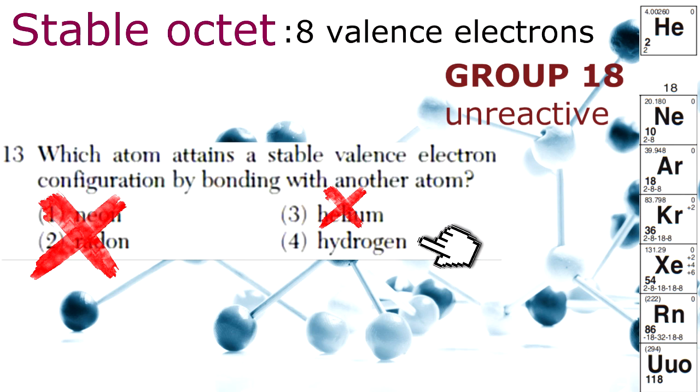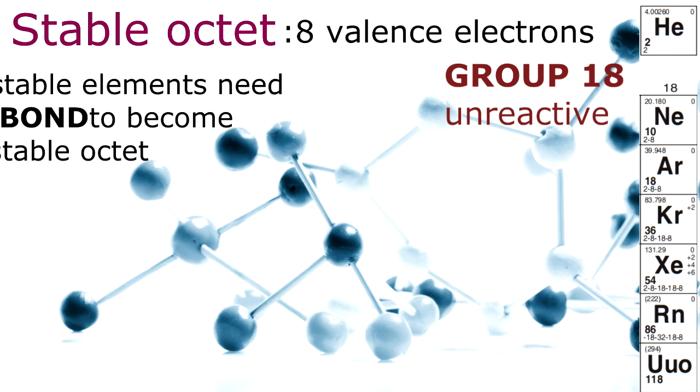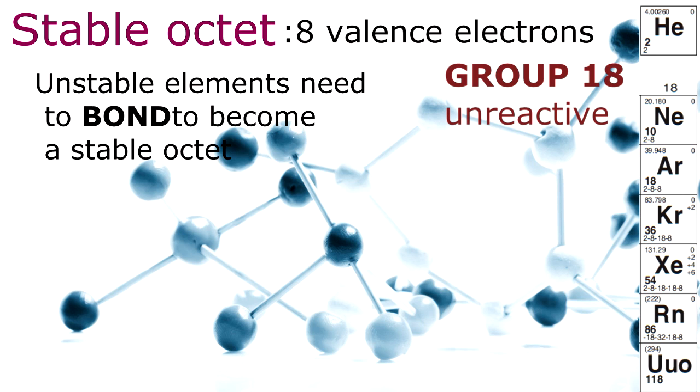Hydrogen only has one balanced electron, so it makes sense that it would bond to reach stability. Therefore, most elements need to bond to reach stable eight balanced electron configurations.